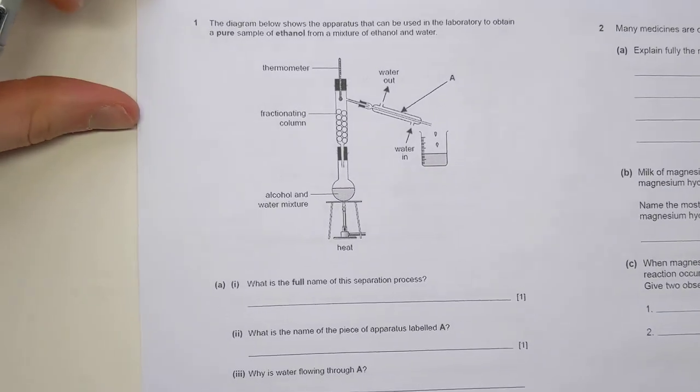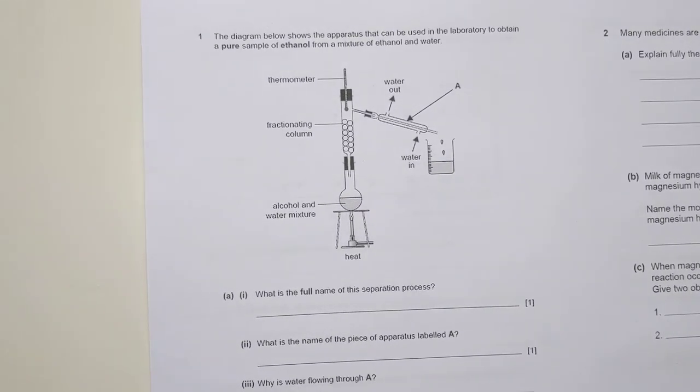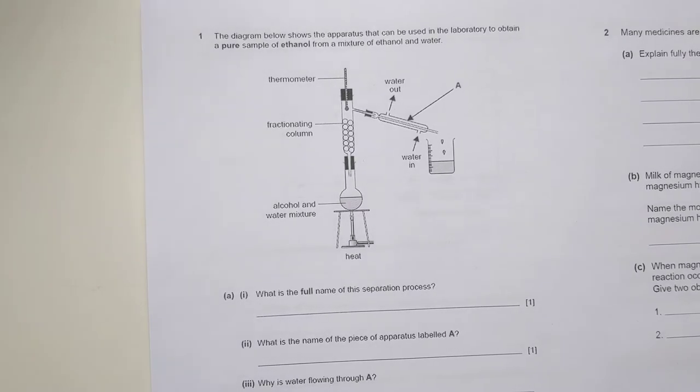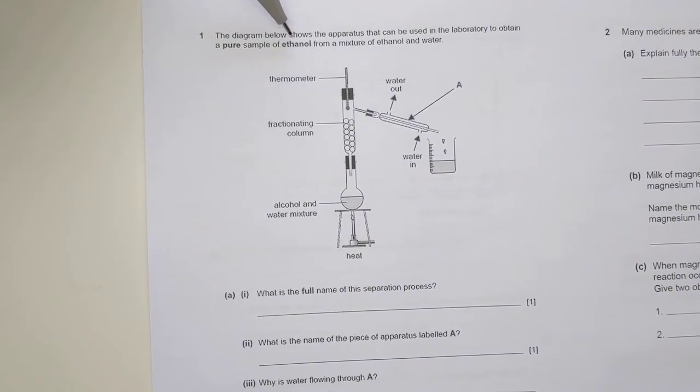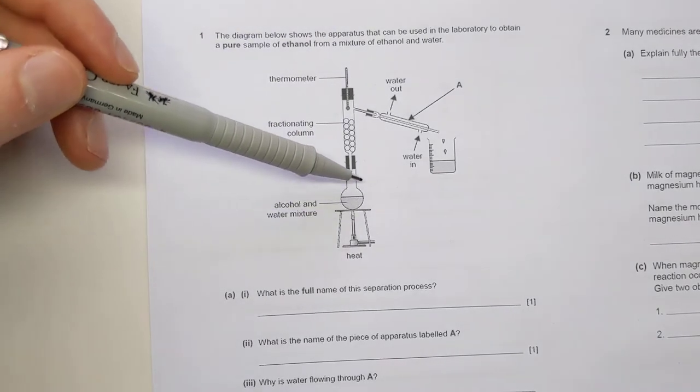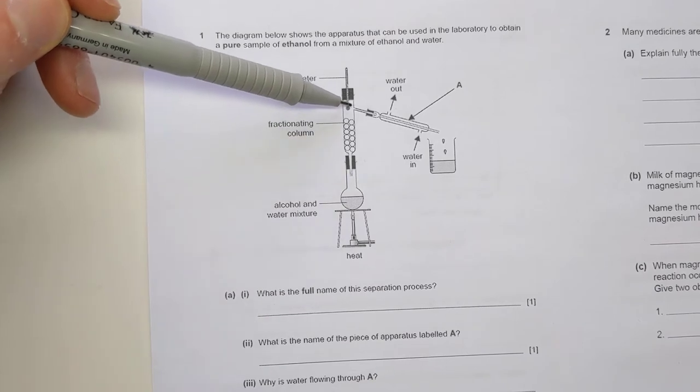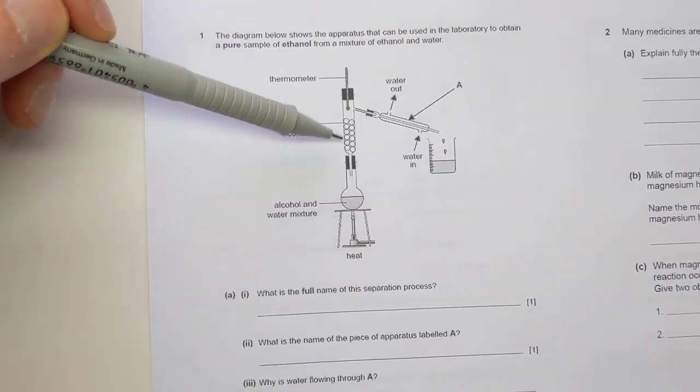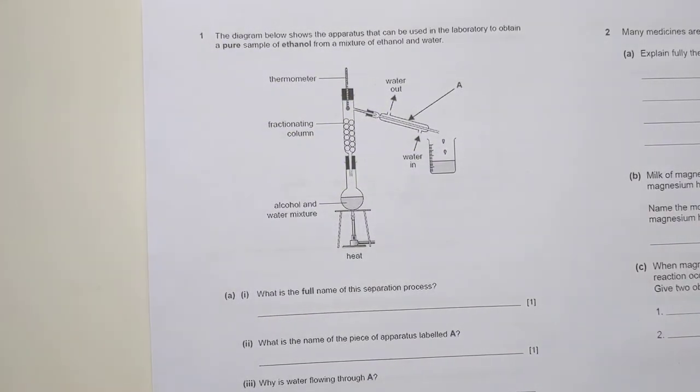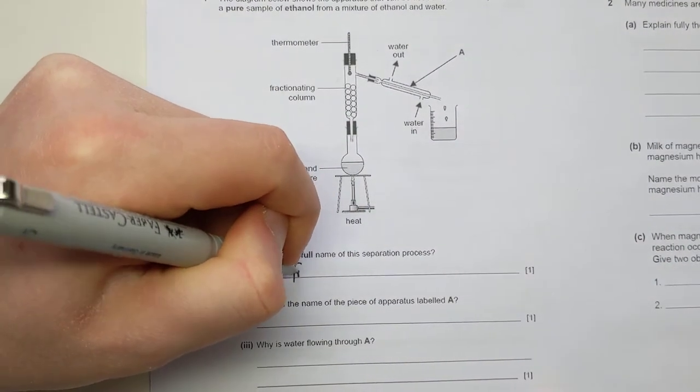The first question gives you this diagram of this apparatus. It's obviously a separating technique. It tells you you're trying to use it to separate a pure sample of ethanol from a mixture of ethanol and water. So the ethanol and water is in here. It's going to go up through this and out this other end of the apparatus. You have to know from your notes what the apparatus is. It's a very specific name for that technique. It's known as fractional distillation.